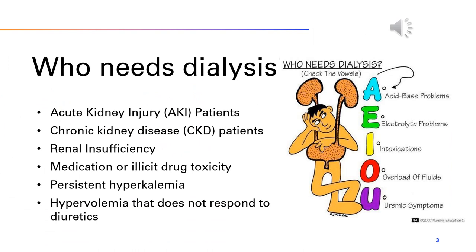Our acute kidney injury patients and chronic kidney disease patients will need dialysis. Anyone with any type of renal insufficiency, people with severe medication or illicit drug toxicity — we're going to clean that out of the blood quickly. Anyone with persistent hyperkalemia for any reason other than kidney disease, and people with hypervolemia that does not respond to diuretics — this could also be our congestive heart failure patients.